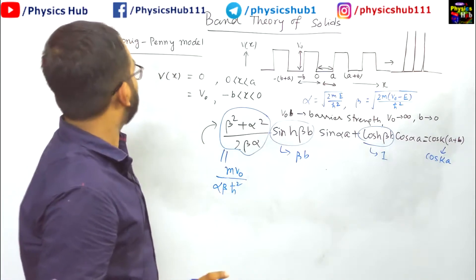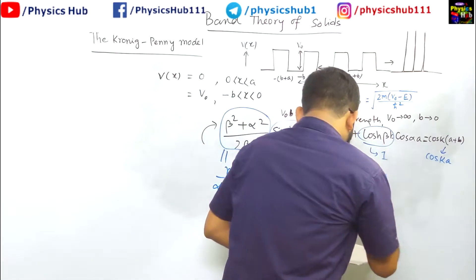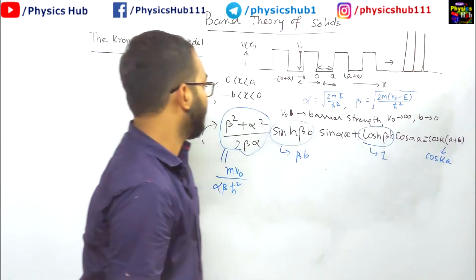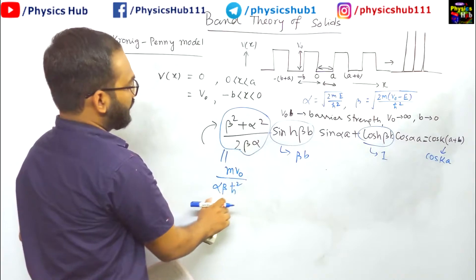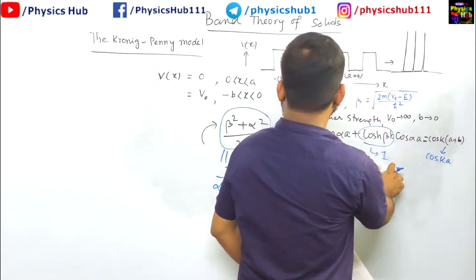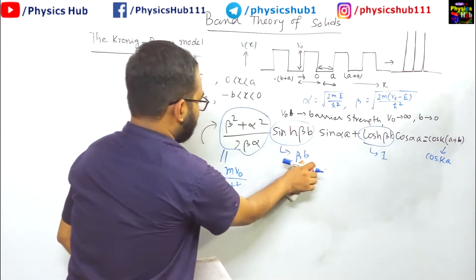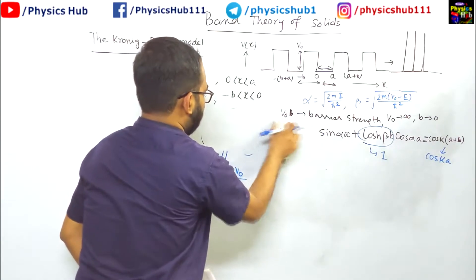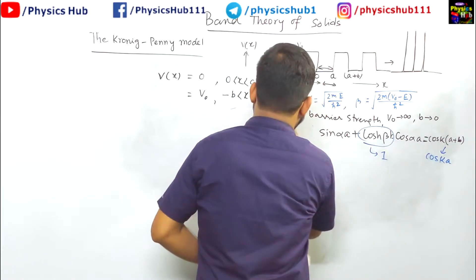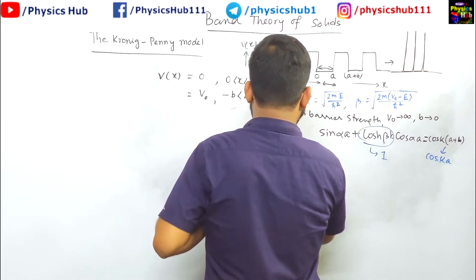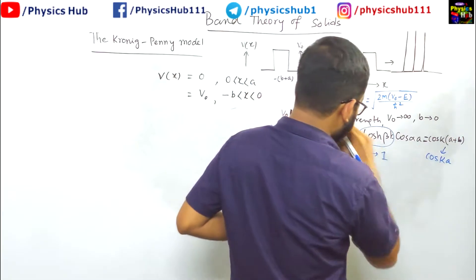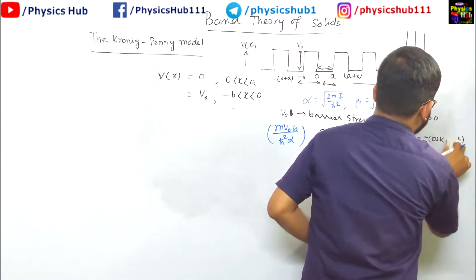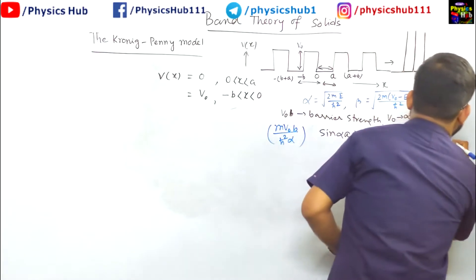Kronig Penney defined another quantity p. Let us write the final equation after doing this approximation, then it will be easier for understanding. Just remember this value is m v naught by alpha beta h cut square, this value is beta v, this value is sin alpha, this value is 1. If you multiply this, this beta will cancel. So m v naught beta by alpha h cut square will come here in the first term. This will be m v naught into b divided by alpha into h cut square into sin alpha a, and this cosh hyperbolic beta b is 1. This will be cos alpha a, and you can just write it cos k a.